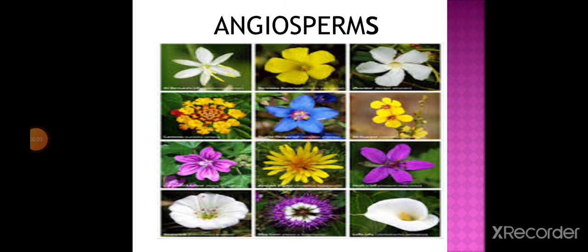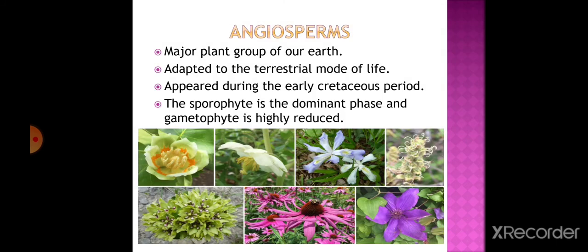We have discussed gymnosperms; now we shall discuss angiosperms. Plants bearing ovules enclosed in a protective cover called the ovary are called angiosperms. Angiosperms are flowering plants and the most diverse group of land plants. Like gymnosperms, they are seed-producing plants and constitute the major plant group of our earth, adapted to terrestrial life. This group appeared during the early Cretaceous period and dominates vegetation on a world scale.